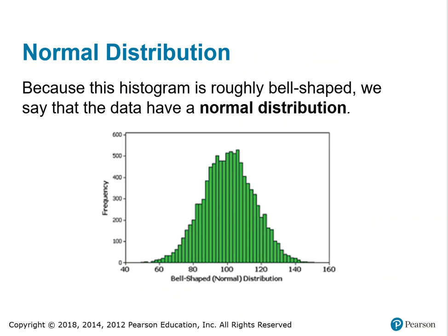The normal distribution — because this histogram is roughly bell-shaped, we say that the data have a normal distribution. If I were to draw a curve to trace what was going on in the picture, I would end up with a curve that looks sort of like a bell. A normal distribution has a property of symmetry. The mean, median, and mode occur at the center mark, and the left side of the figure matches the right side if it were folded on that red vertical line. That's what symmetry means.